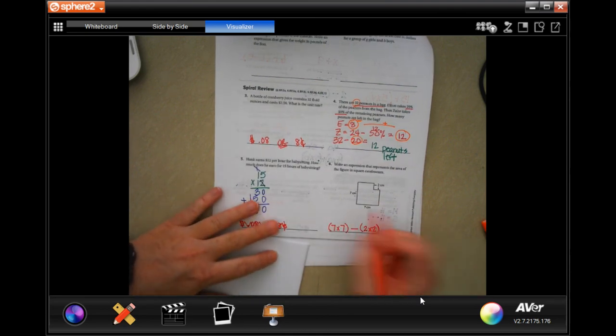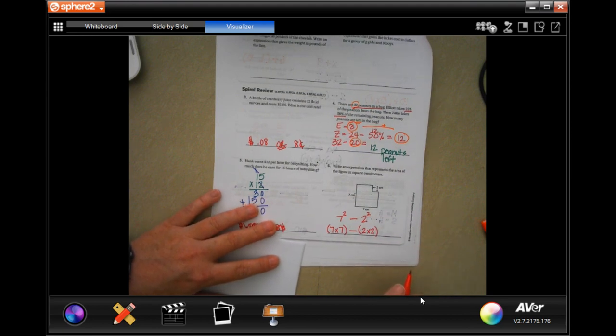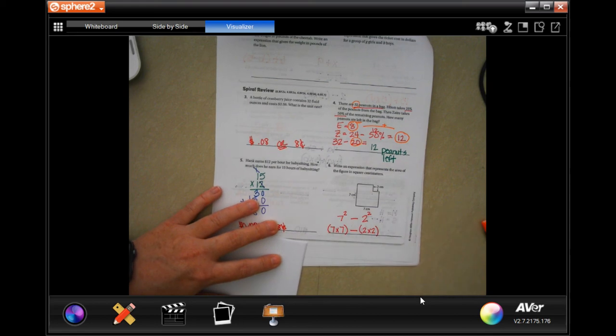Now we could also write seven squared because there's two. That's it, guys.